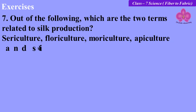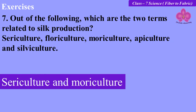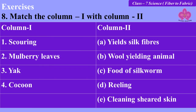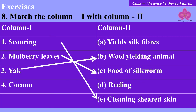The answer is: sericulture and moriculture. The last question for today is: match column one with column two. Look at the options in column one and column two. The matching is: scouring — cleaning; sheared skin — mulberry leaves (food of silkworm); yak — wool-yielding animal; cocoon — yields silk fibers.